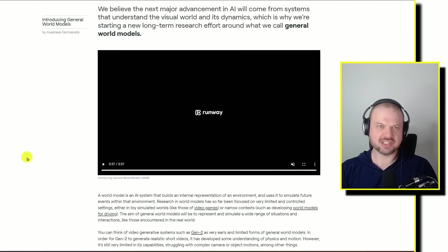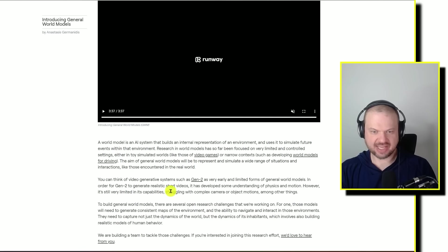So to me, it almost sounds like what they're talking about is having these AIs build almost a simulation of the world. And then within that sort of simulation of the world, almost like taking a camera and recording something. And then that becomes the video that then is extracted and becomes this AI video. So currently they have their Gen 2 system, which I've showcased some of the stuff that you can do with it. They're saying in order for Gen 2 to generate realistic short videos, it has developed some understanding of physics and motion.